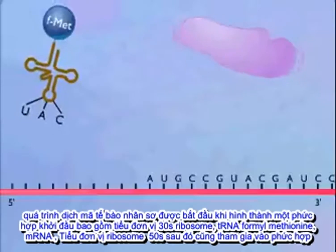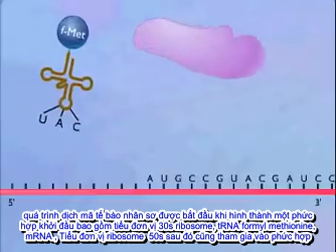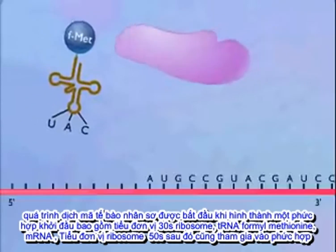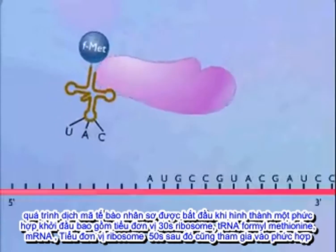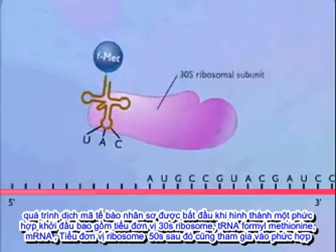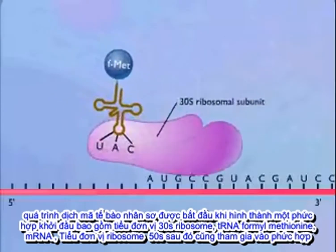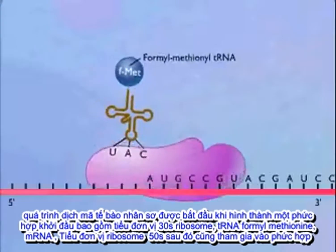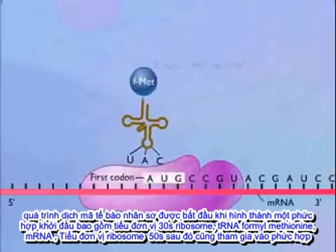In prokaryotic cells, translation is initiated by formation of an initiation complex consisting of the 30S ribosomal subunit, formyl methionyl tRNA, and messenger RNA.